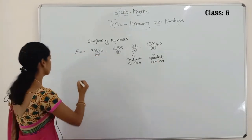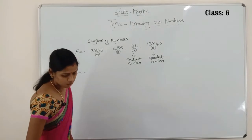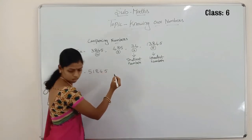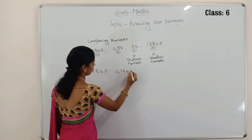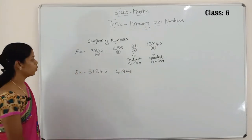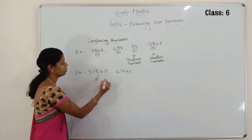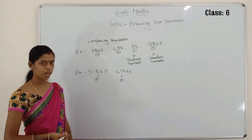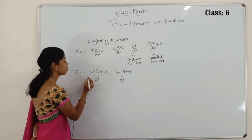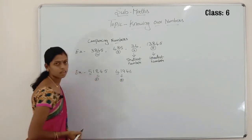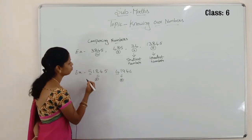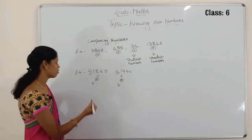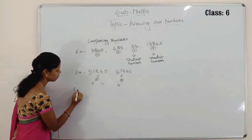Just one more example. Now you count the digits. Both are 5-digit numbers. How do we compare now — which is the biggest and which is the smallest? First you have to observe the first digit in the ten-thousands place. Here we have a 5, here we have a 4. Which is the greatest? 5 is greater than 4.